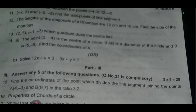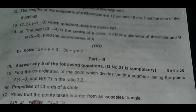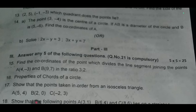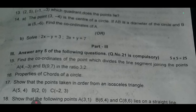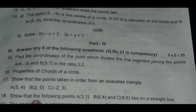Question number 15: find the coordinates of the points which divides the line segment joining the points A (-4, -3) and B (9, 7) in ratio 3 to 7. Sixteenth one: properties of the chords of a circle.